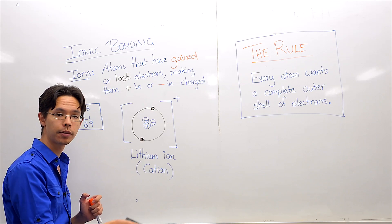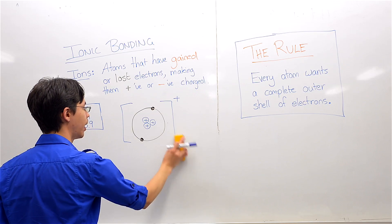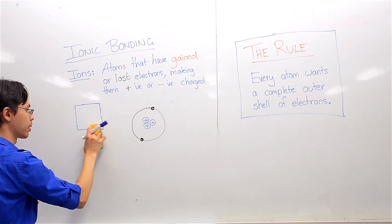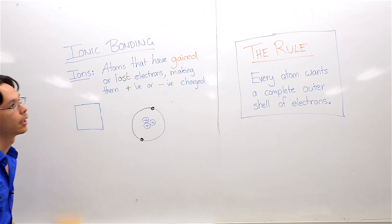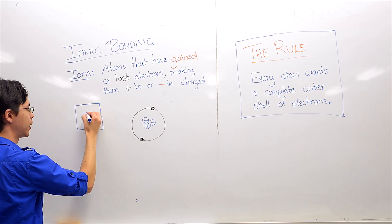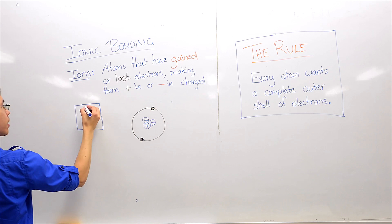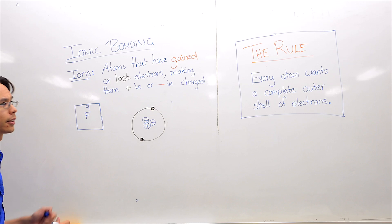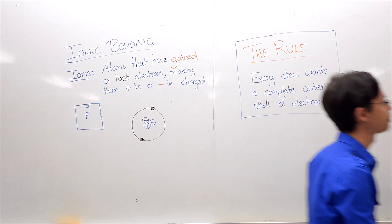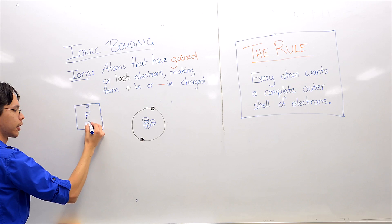Let's look at another example where an atom gains electrons. I will pick fluorine. Elemental fluorine has an atomic number of nine — I'm looking at the periodic table across the room — and an atomic weight of 19. That's a heavy atom for its size. Atomic number of nine, therefore it must have nine protons.